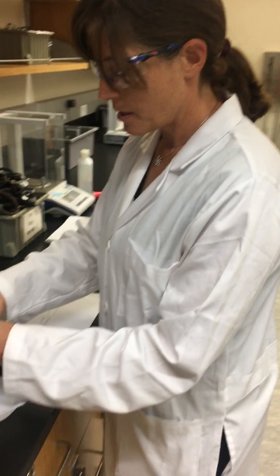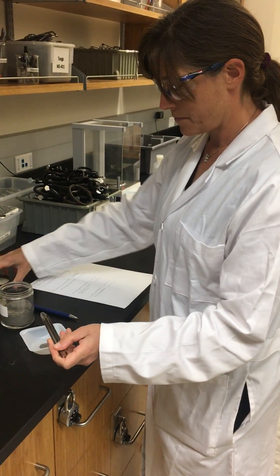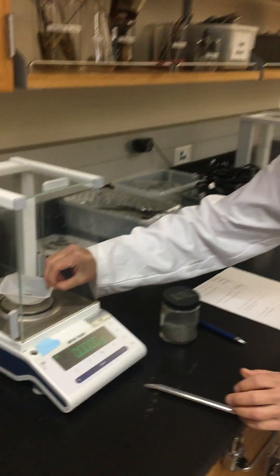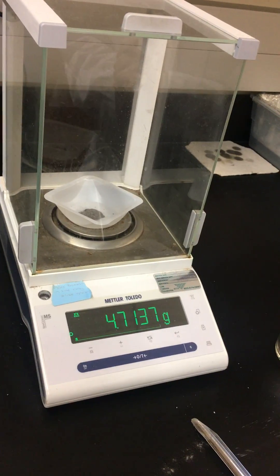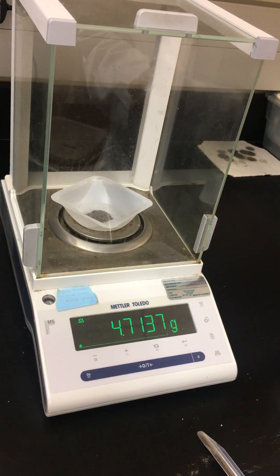So we will take some iron. We'll add it to our balance and we'll record the mass. And then you'll be able to subtract the weigh boat to get the mass of the iron and then use that to do your calculation.